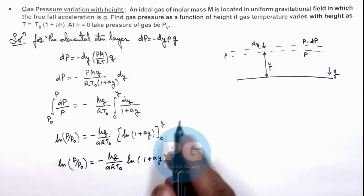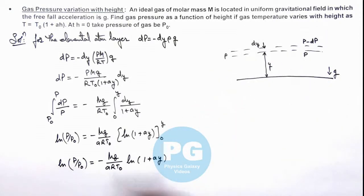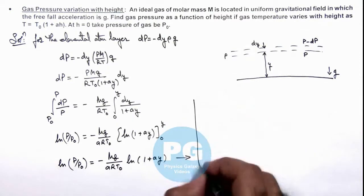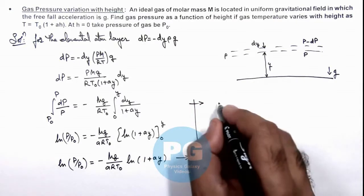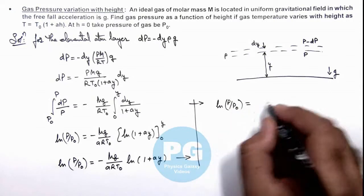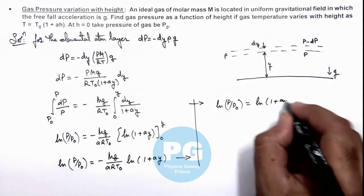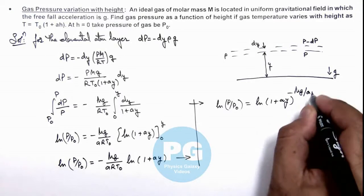And we are required to find the gas temperature as a function of height y. So this is directly giving us result, we can take this term on the power of the ln argument element, so this becomes ln(P/P₀) is equal to ln(1 + αy) to whole power minus Mg/(αRT₀).